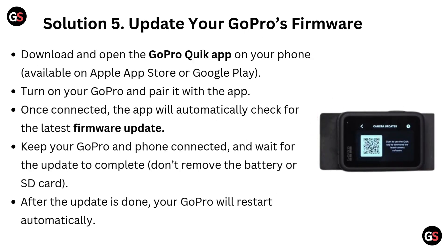Solution 5: Update your GoPro's firmware. Download and open the GoPro Quick app on your phone, available on the Apple Store or Google Play. Turn on your GoPro and pair it with the app. Once connected, the app will automatically check for the latest firmware update. Keep your GoPro and phone connected and wait for the update to complete. Don't remove the battery or SD card. After the update is done, your GoPro will restart automatically.